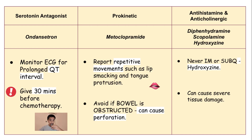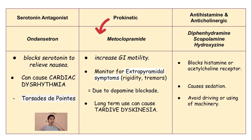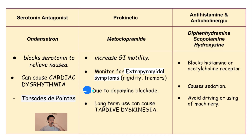Let's proceed with prokinetics. An example of a prokinetic is metoclopramide. The mode of action of this drug is to increase GI motility and movement. We have to monitor for EPS, or extrapyramidal symptoms, due to dopamine blockade. Extrapyramidal symptoms are in the form of rigidity and tremors, which are also very common in Parkinson's disease.